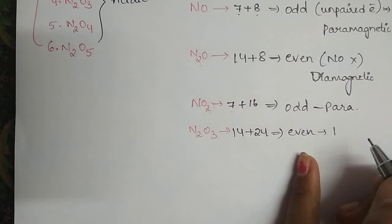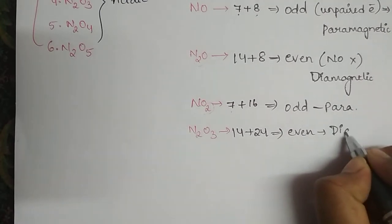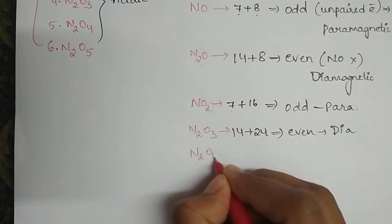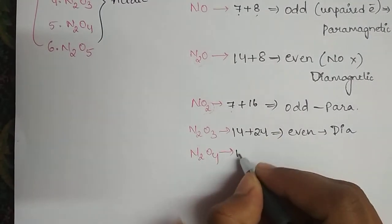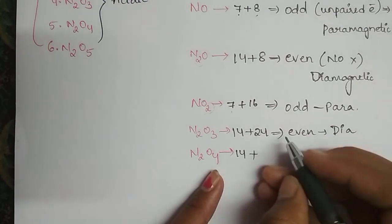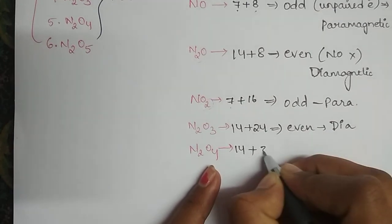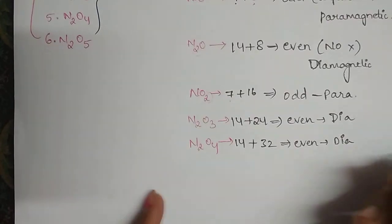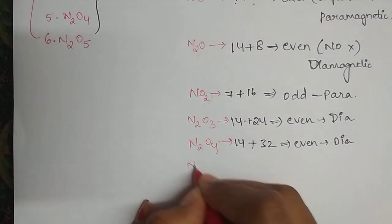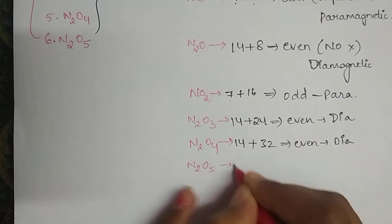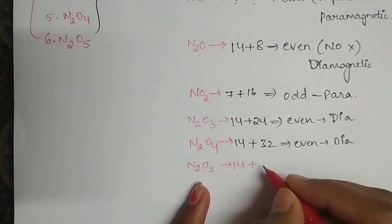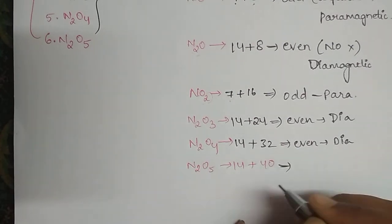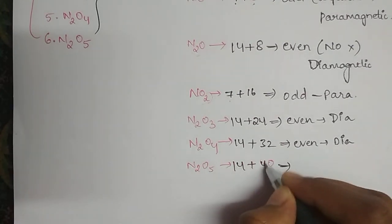Next, N2O4: two nitrogens give 14, plus four oxygens give 4×8 = 32. So 14+32 = 46 — even plus even gives even — so N2O4 is diamagnetic. Next, N2O5: 14 plus 5×8 = 40. Again even, so N2O5 is also diamagnetic in nature.